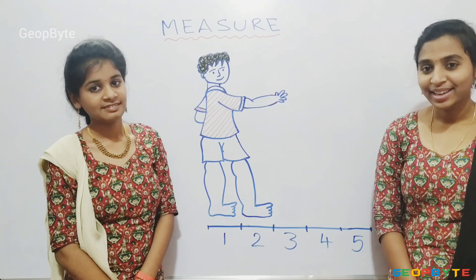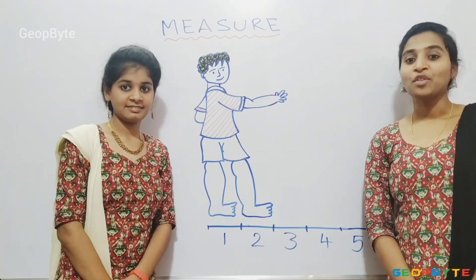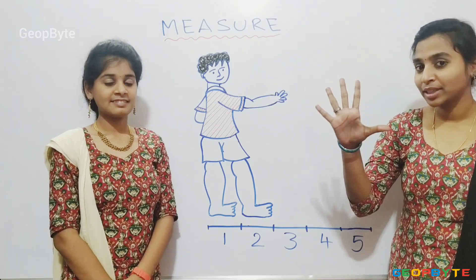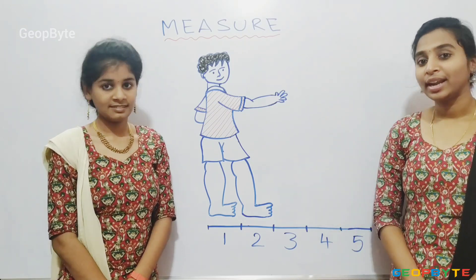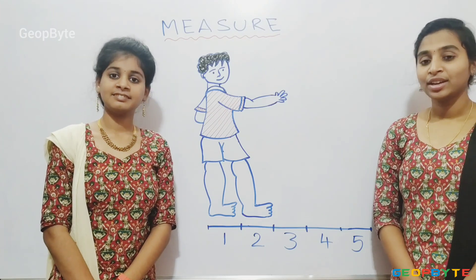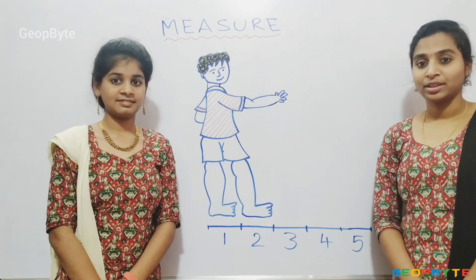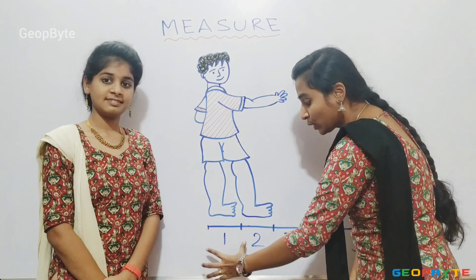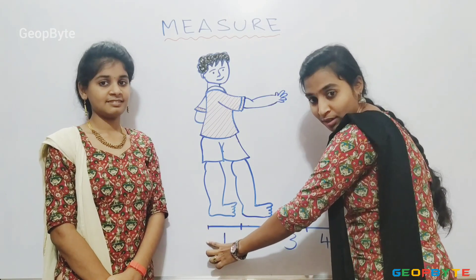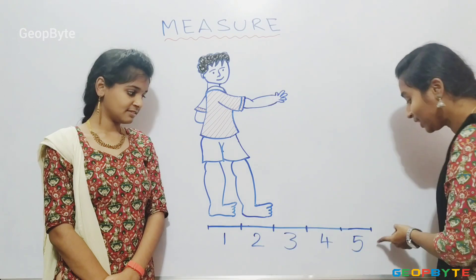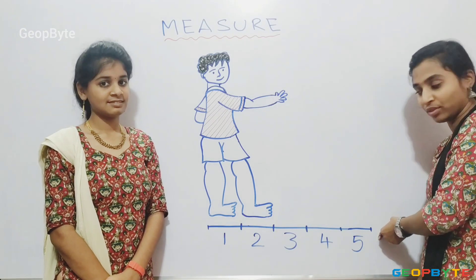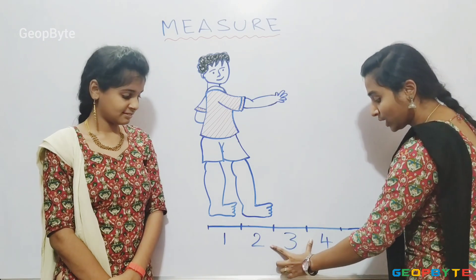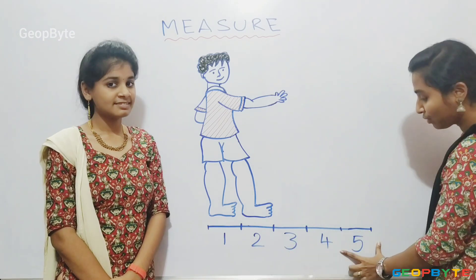Till now we measured the distances using the span method. Now, let us measure the distance using the feet method. See here, this boy's foot is equal to one feet. This line is divided into five feet. One, two, three, four and five.